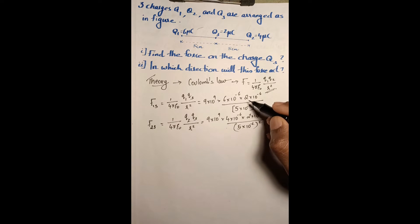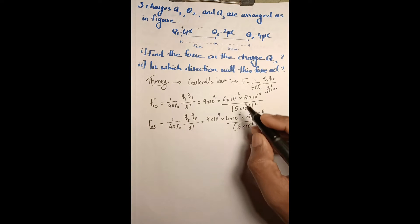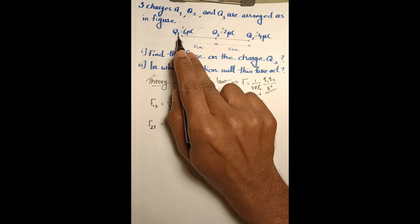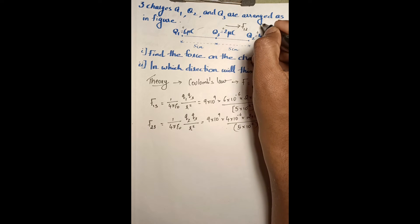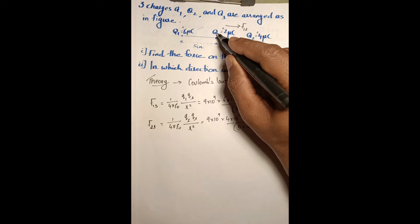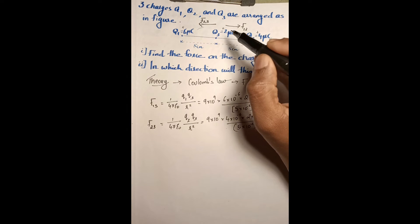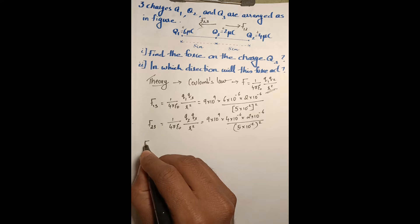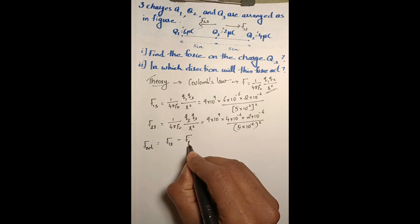To find the total force we must know the direction of these forces. All three charges are positive. Since positive and positive charges repel each other, q1 repels q3 in one direction, and q2 also repels q3 in the opposite direction. From the figure it is clear the forces are opposite to each other. Since force is a vector quantity, the net force will be the difference of the two: F-net equals F13 minus F23.